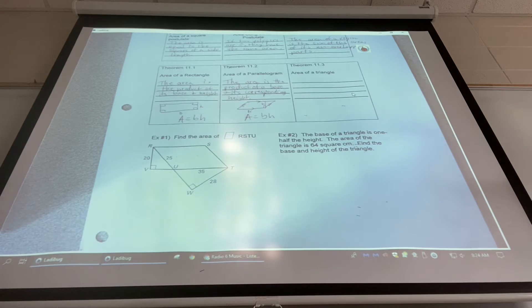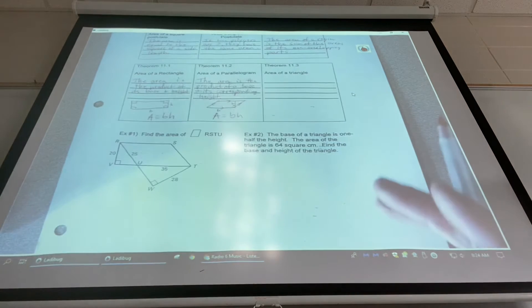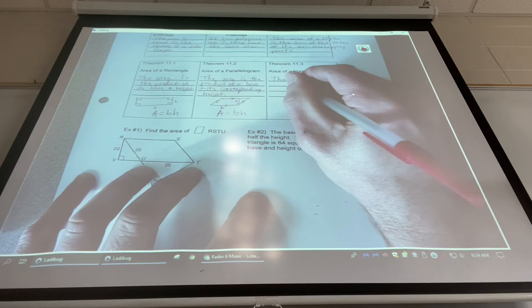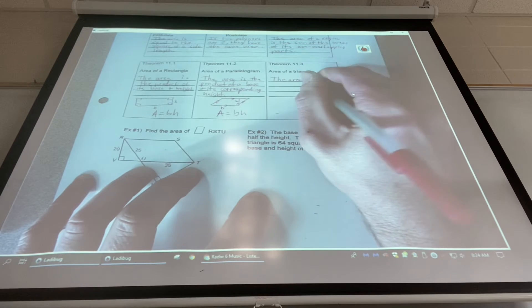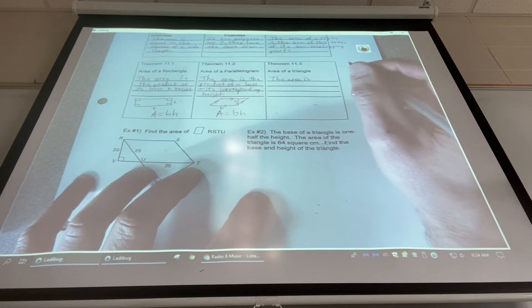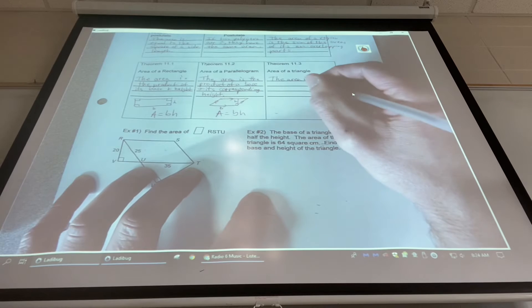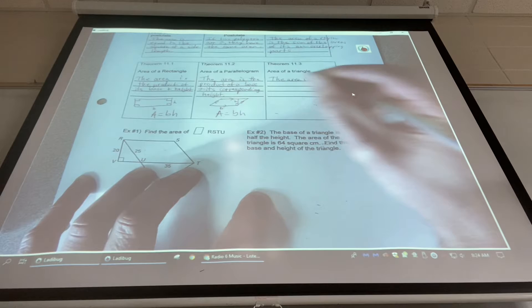And then finally, the area of a triangle. The area is, what is it? It's one half the base. Oh yeah. One half the product of a base and its corresponding height.